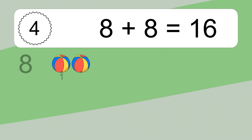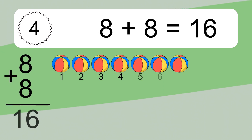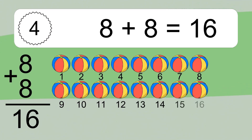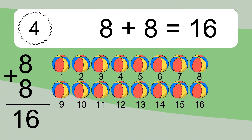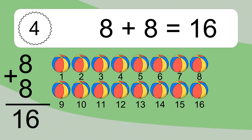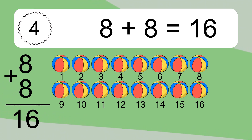8 plus 8 equals 16. Let's count it. 1, 2, 3, 4, 5, 6, 7, 8, 9, 10, 11, 12, 13, 14, 15, 16.